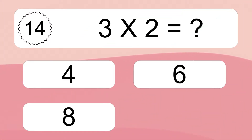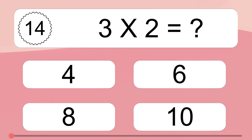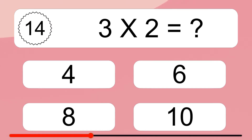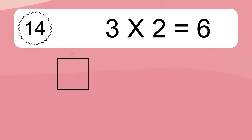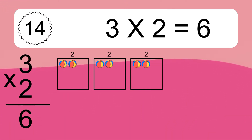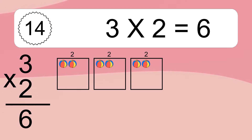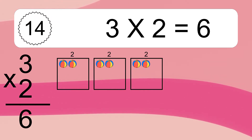3 times 2 equals what? 3 times 2 equals 6. We have 3 boxes and each box has 2 colorful balls inside. If you count all the balls in all the boxes together, you will have 3 times 2 balls. This equals 6 balls.